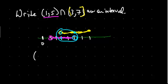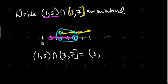So we get at the intersection, (1,5) intersected with (3,7] equals (3,5). All right, that's going to conclude this video on unions and intersections. Thank you.